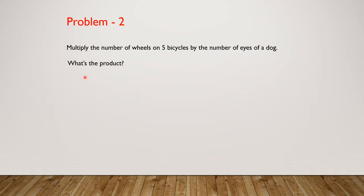Problem two. Multiply the number of wheels on five bicycles by the number of eyes of a dog. What's the product? Feel free to pause the video to solve the question yourself.